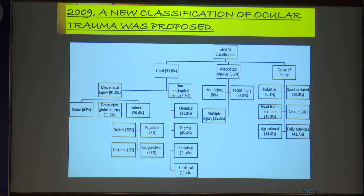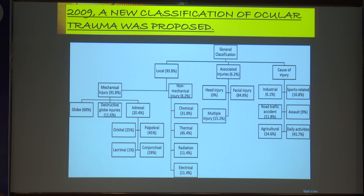In 2009, a new classification of ocular trauma was proposed. The general classification covers local injuries, associated injuries, and cause of injury. The local category is subdivided into mechanical and non-mechanical. Non-mechanical comprises chemical, thermal, radiation, and electrical burns, whereas mechanical injuries are divided into globe injuries, destructive globe injuries, and adnexal injuries.